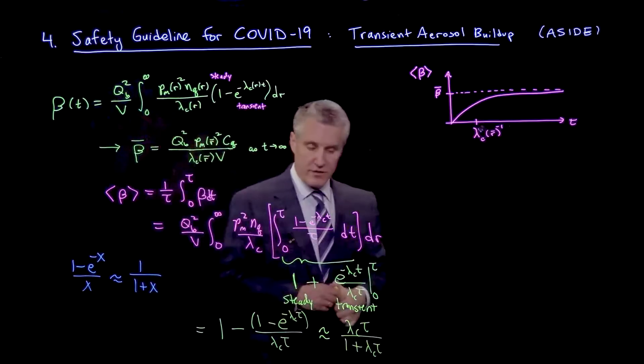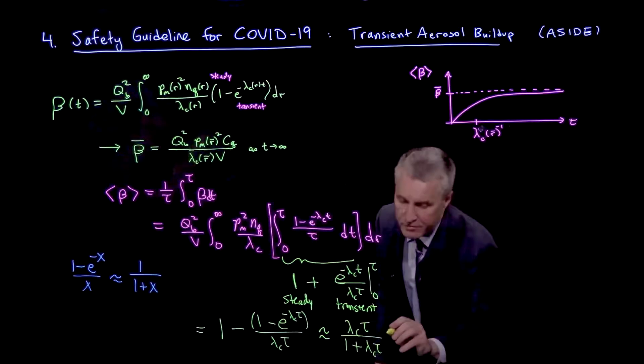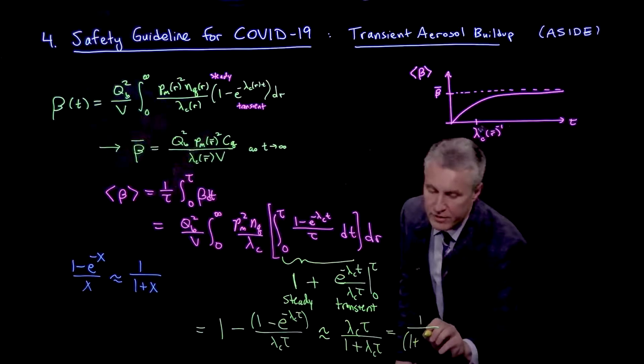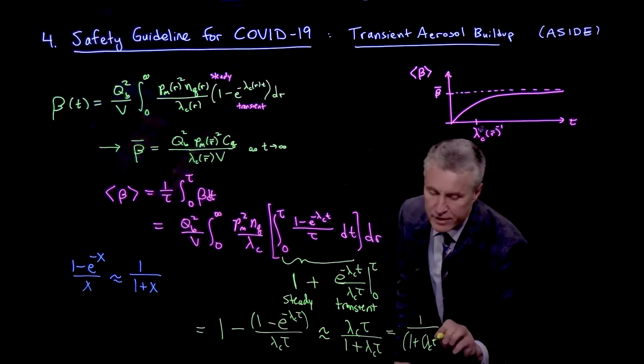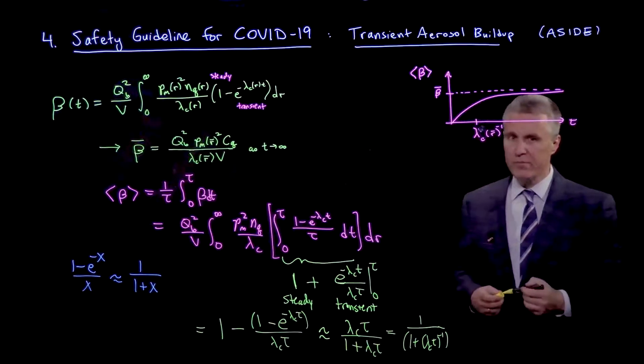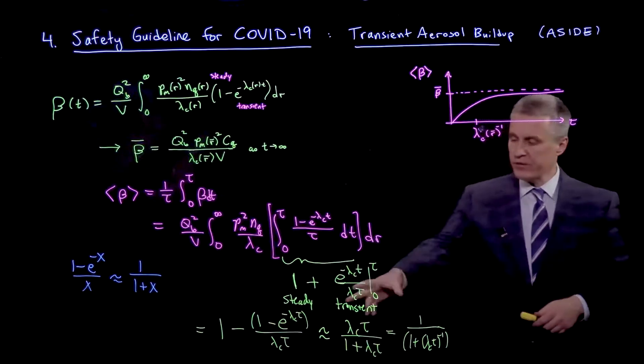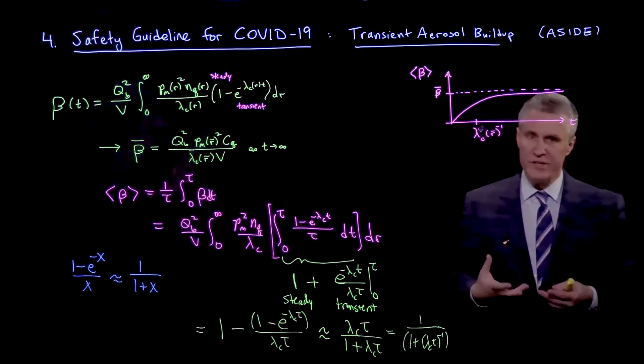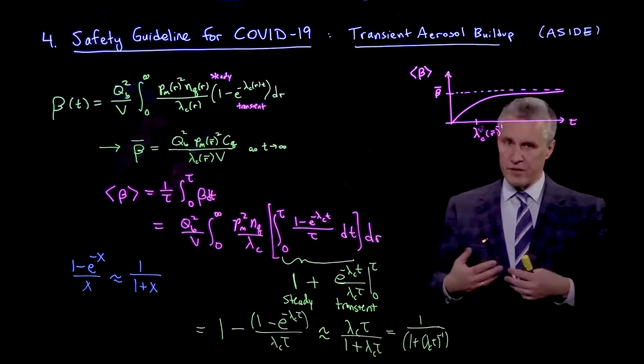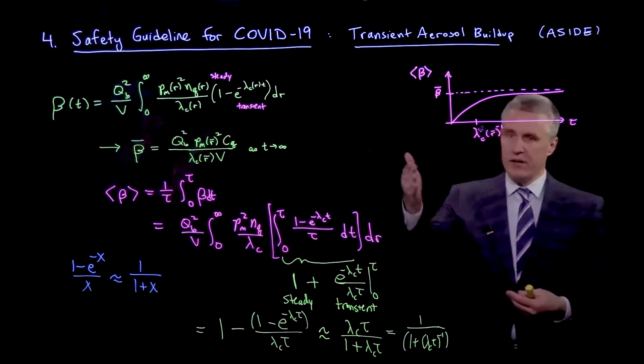So this is my approximation. In fact, I can further then write that as 1 over 1 plus lambda c tau inverse, dividing the numerator and denominator by lambda c tau. So I'm just making some approximations here that allow me to get a very simple expression in the end for my safety guideline, taking into account this transient buildup here.